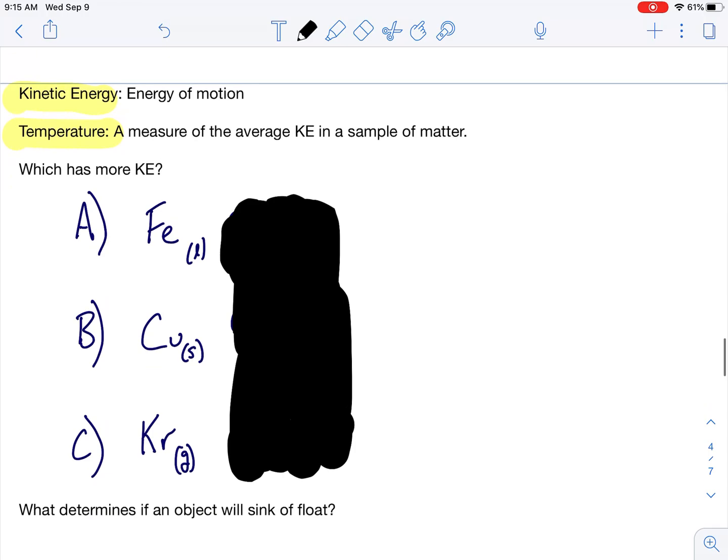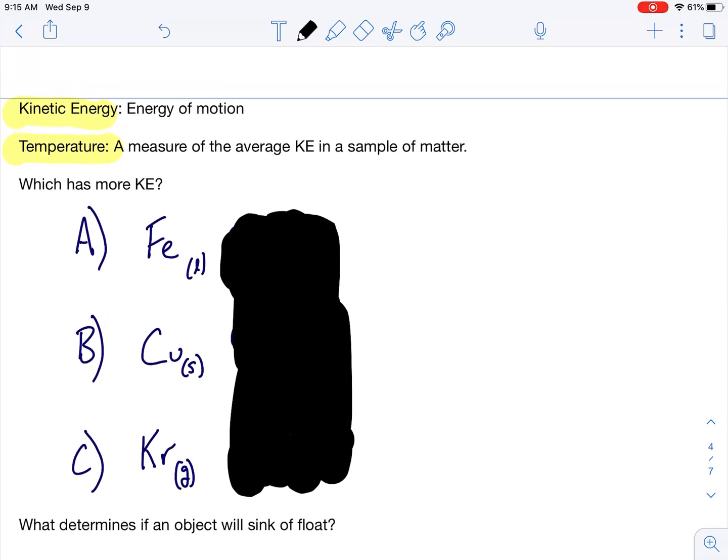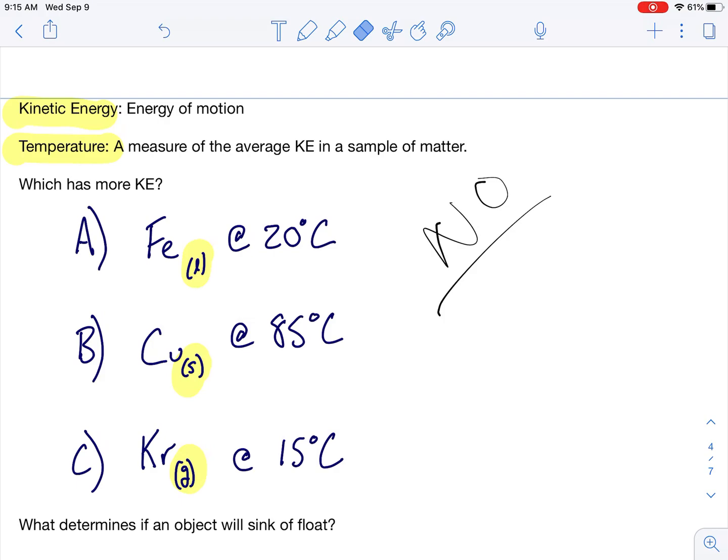So, here we have a question for you. Which of these has more kinetic energy? We have some iron in the liquid state, copper in the solid state, and krypton in the gaseous state. Can you answer this question? No, you cannot. Why can't you? Because you don't have its temperature. Oh, now I can answer this question. If I'm looking at kinetic energy, how to measure kinetic energy is temperature. So, that means that even though this is your solid state, your correct answer is B. That has the highest temperature.